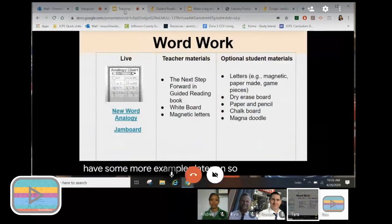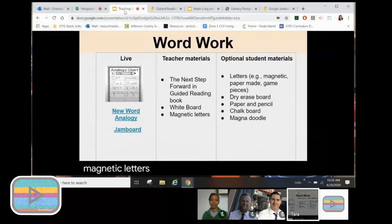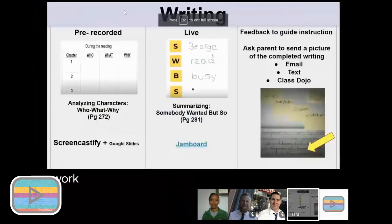Some of the word work teacher materials is again, the next step forward in guided reading book, a whiteboard, magnetic letters. Optional student materials are letters that either are magnetic or paper made or maybe even game pieces, a dry erase board, paper and pencil, chalkboard, and you might have to use whatever you have available or whatever the students have available to use for word work. The good thing about word work and all this that we're doing for teaching guided reading remotely is that it doesn't have to stop at this NTI time. We can also use these things in the classroom when we do have that chance to go back.